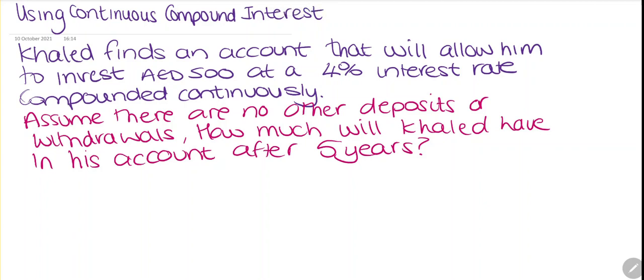We're going to look at using continuous compound interest. Khaled finds an account that will allow him to invest 500 dirhams at a 4% interest rate compounded continuously. Assume there are no other deposits or withdrawals — how much will Khaled have in his account after five years? We need to use the compound interest formula, but for continuous, which is going to be slightly different to what we've seen before.